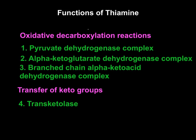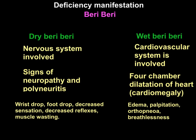The other kind of reaction where thiamine is used is the transfer of keto groups, done by the transketolase enzyme, which participates in the pentose phosphate pathway.